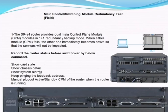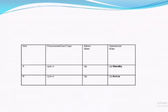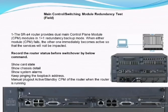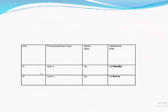Then we type the same commands and perform the switching module redundancy test to check whether the CPM is running normally in working mode or offline mode. If the card is up, it will show an up status; if running abnormally, it will show a down status. The operational status is checked for both CPM A and CPM B.